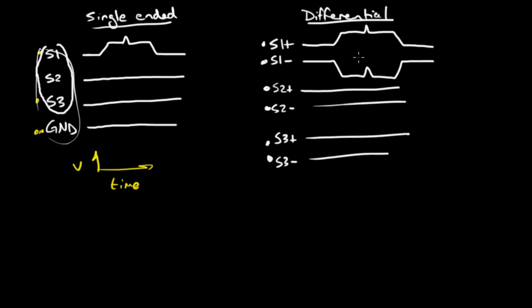And so when we subtract signal one plus, or signal one minus from signal one plus, that glitch gets cancelled out.